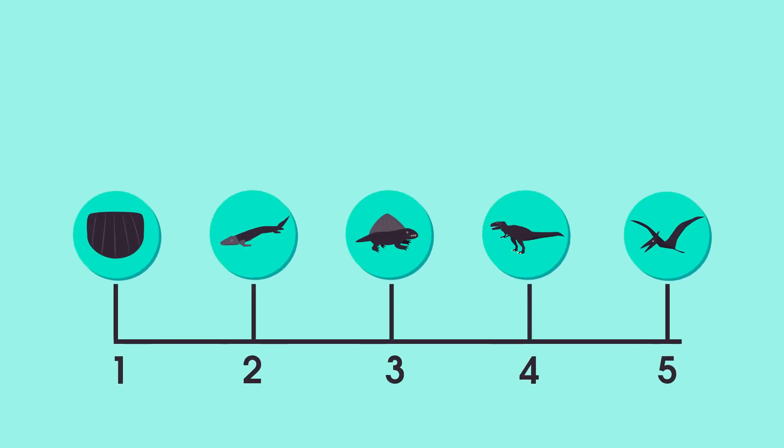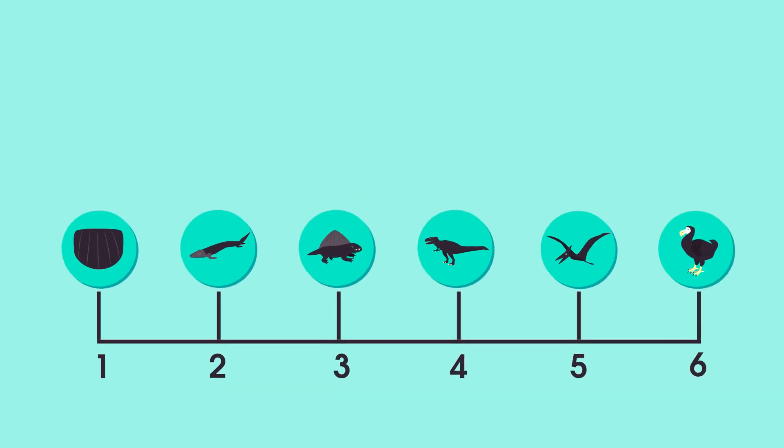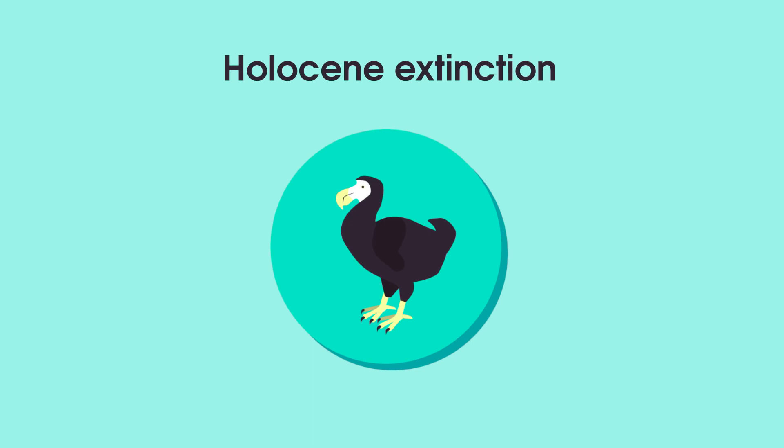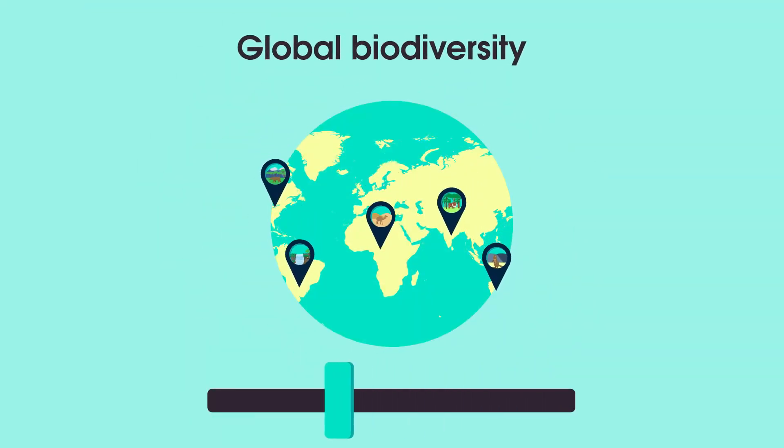Biodiversity has declined in the past and a total of five major extinction events have occurred. Currently, we are in the planet's sixth major extinction event, known as the Holocene extinction. There are many proposed reasons for the current drop in biodiversity.